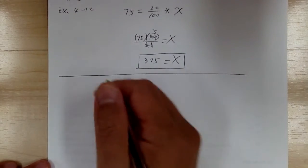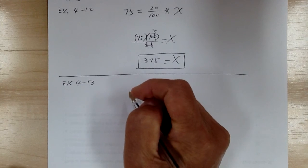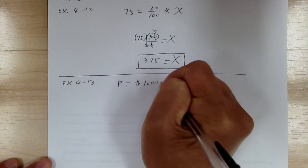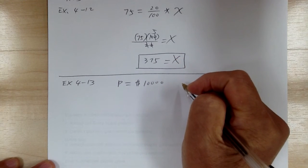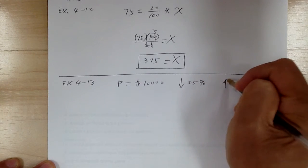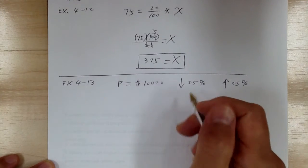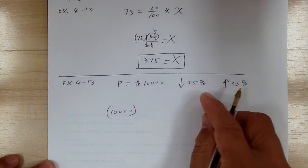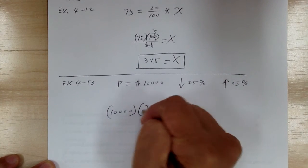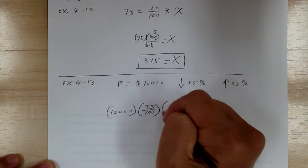Let's go to example 4-13. It says the price of the car, so we call it P. So price of the car originally equal to $10,000. If the price is decreased by 25% and then it's increased by 25%, what would be the resulting price? So you started at $10,000. Now when you go down, when you decrease by 25% means you end up with 75%. Now when you go up by 25% means you end up at 125%.